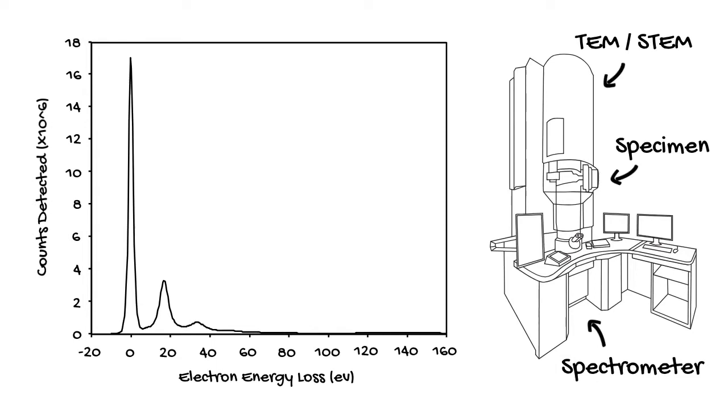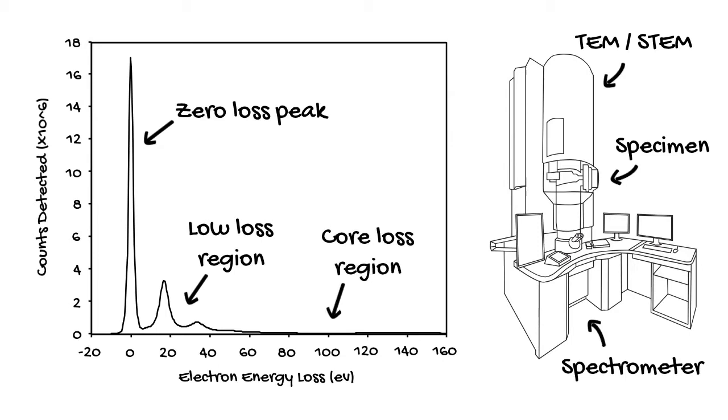Plotting the results looks something like this. Typically, there's a very intense peak centered at zero, corresponding to the large number of unscattered or elastically scattered electrons having no energy loss. Then there's a region of peaks and valleys with intermediate intensity, called the low loss region. And finally, a region of very weak signal called the core loss region, which actually extends far beyond the end of our little example plot here.